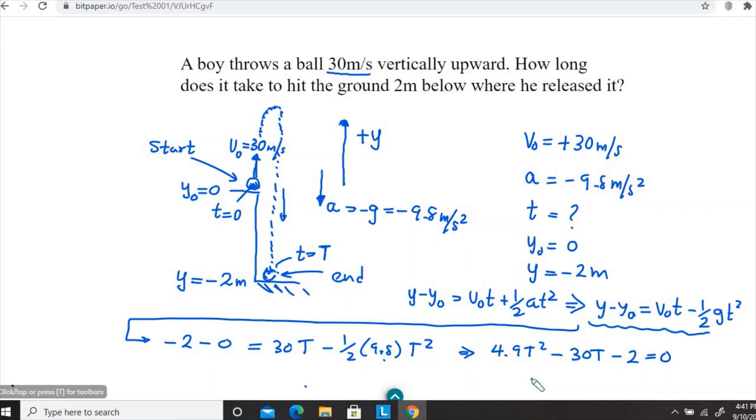We already substituted the minus g, so whenever you have g, you just put the numerical value 9.8. Now I'm going to rearrange this so that I have a quadratic equation in time.